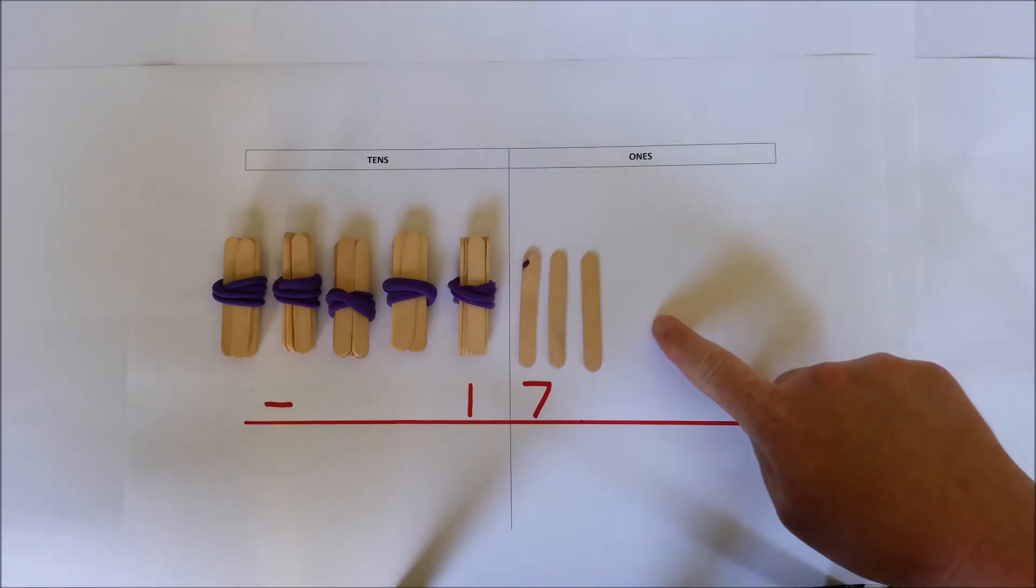Subtract the ones. Three ones take away seven ones, there are not enough ones.